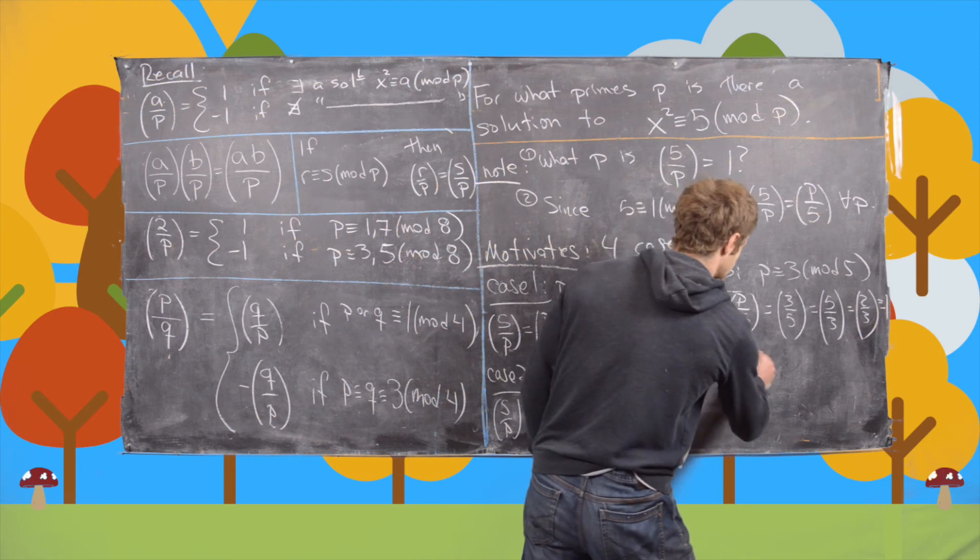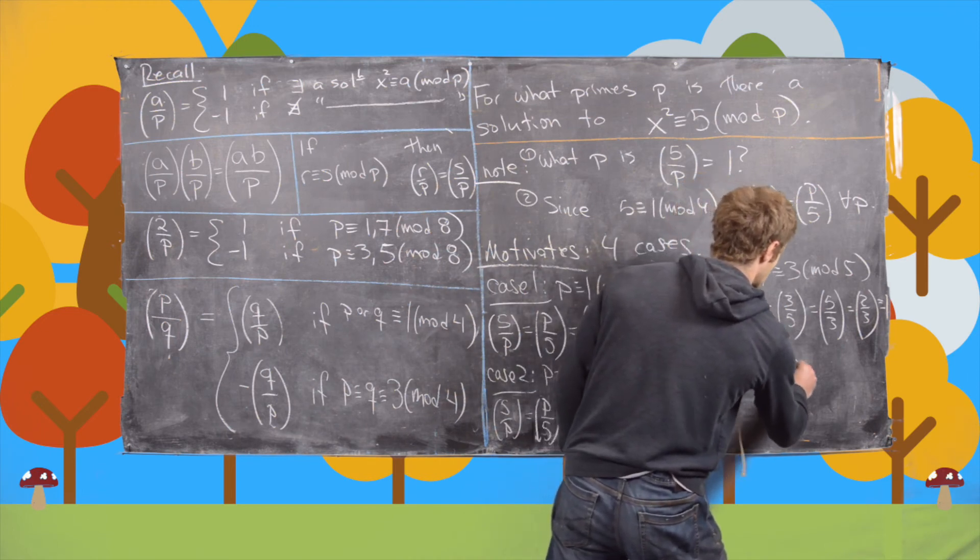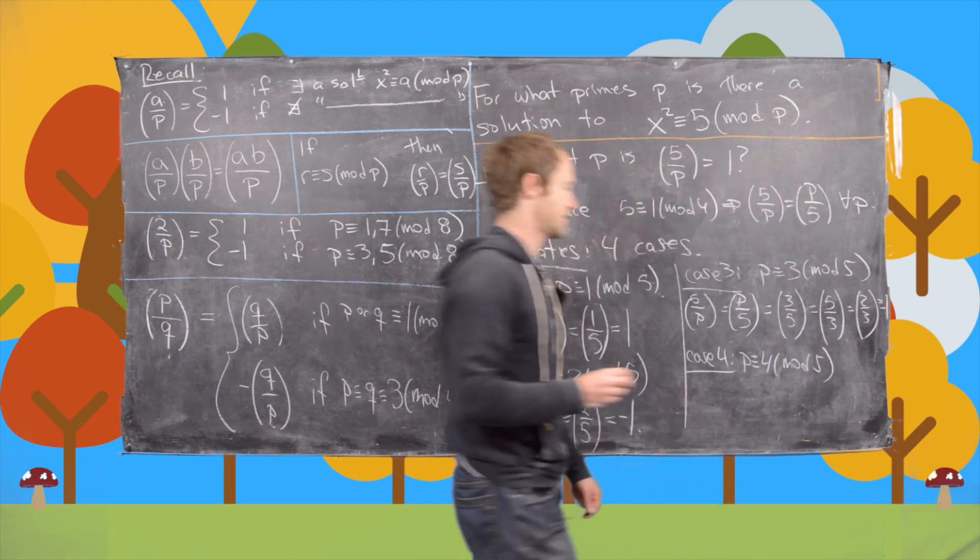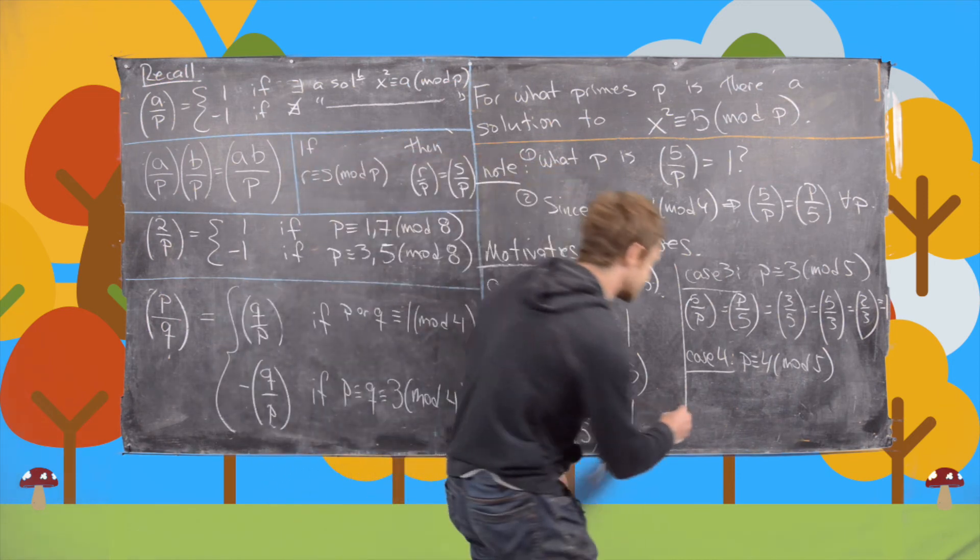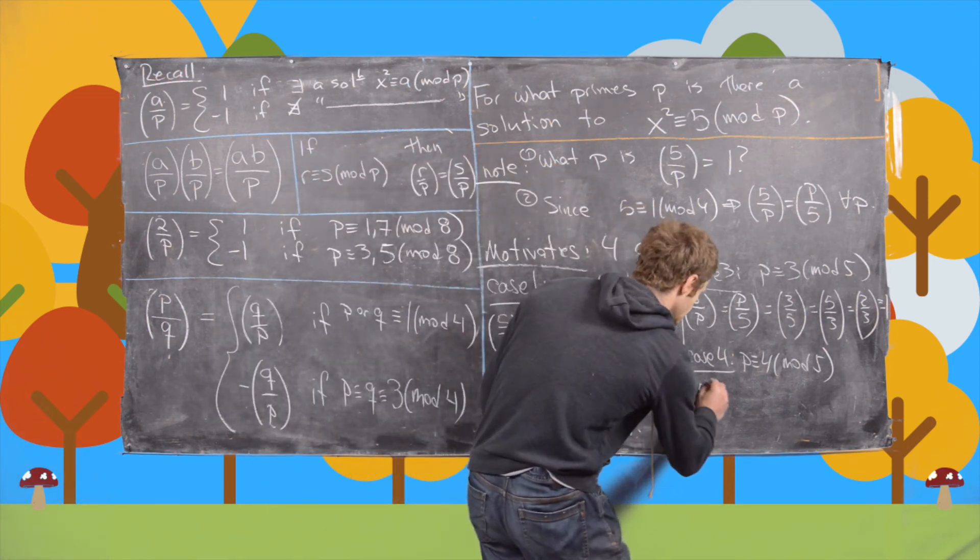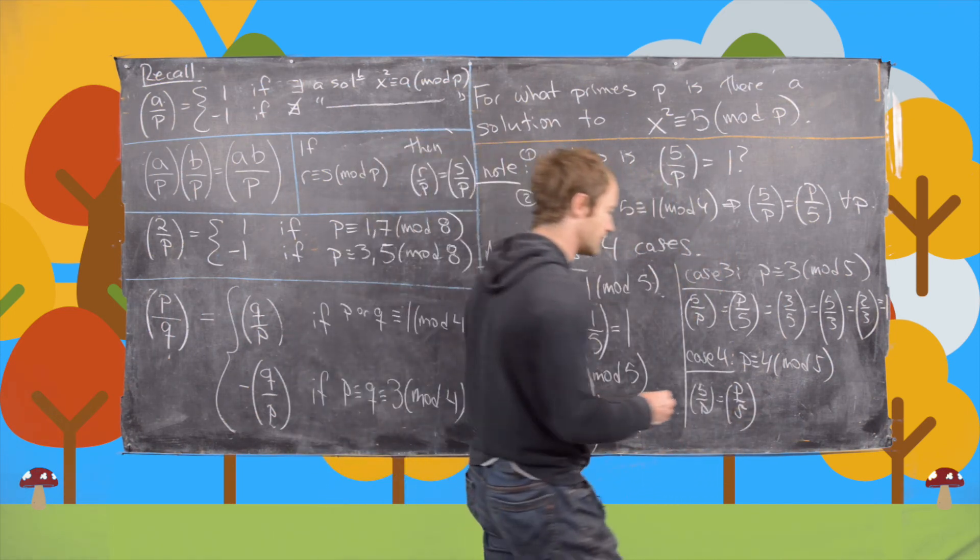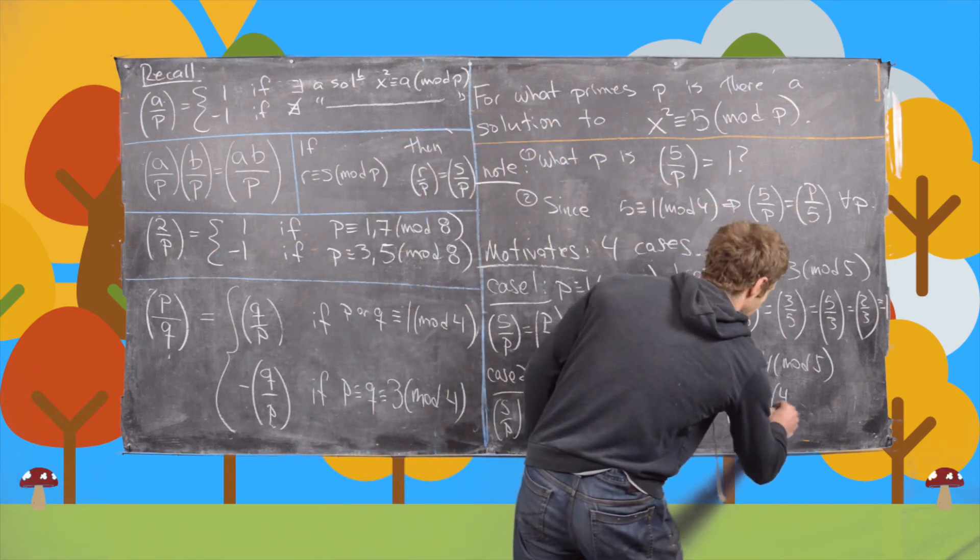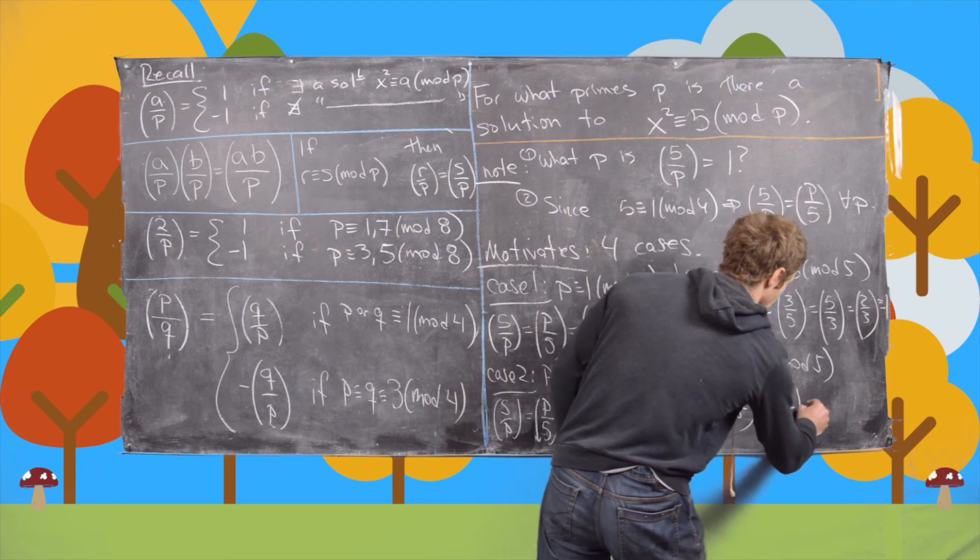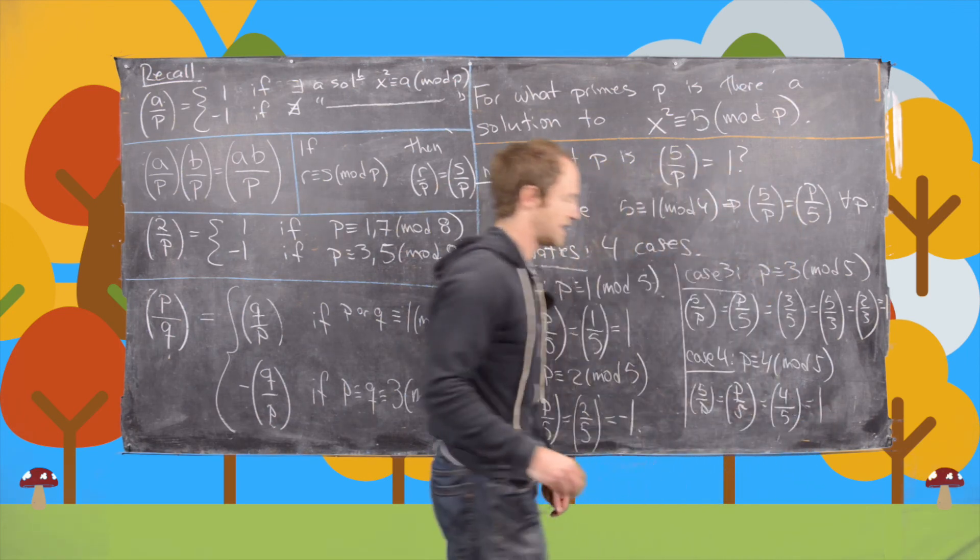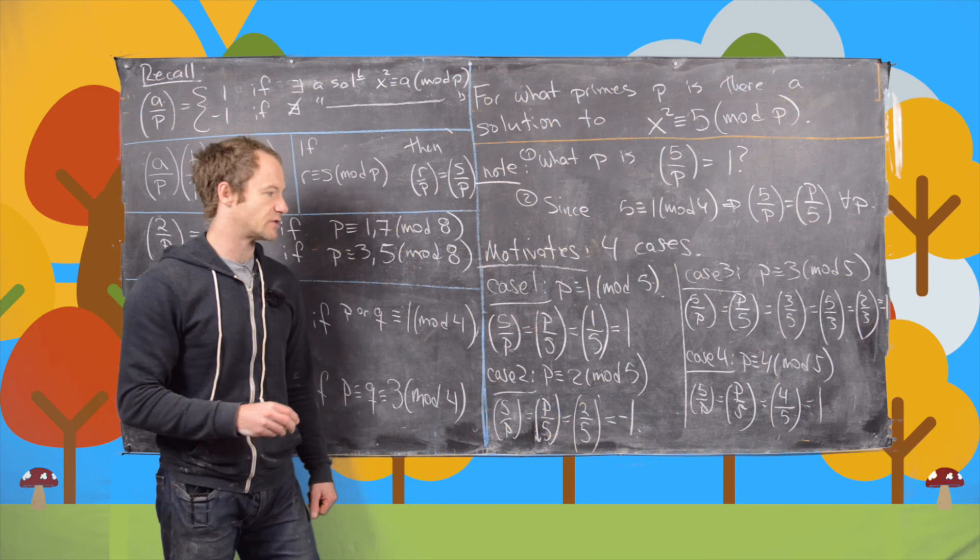So case 4 is p is congruent to 4 mod 5. So now in this case, we have 5 by p is the same thing as p by 5, again by quadratic reciprocity. That's the first step of all of these. But now that is 4 by 5 which is 1 because obviously 2 squared is equal to 1.